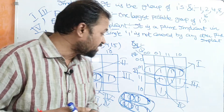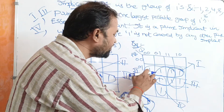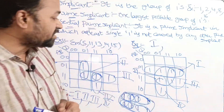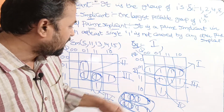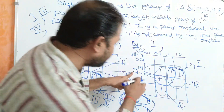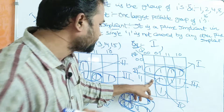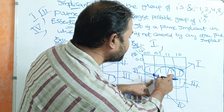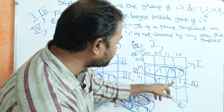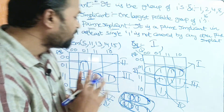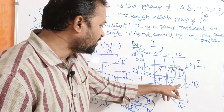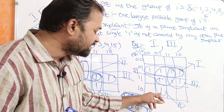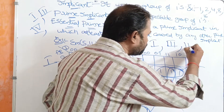In the second example, we also have four Prime Implicants. Let us identify the Essential Prime Implicants. If we observe group one, this one is not covered by any other Prime Implicant — two, three, or four — so group one is an Essential Prime Implicant. If we observe the second group, it is not an Essential Prime Implicant because each of its ones is covered by another Prime Implicant — first, third, or fourth. Focusing on the third group, this one is not covered by any other Prime Implicant, so the third one is an Essential Prime Implicant. For the fourth group, this one is also not covered by any other Prime Implicant, so the fourth one is also an Essential Prime Implicant.